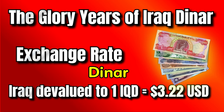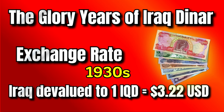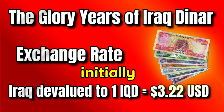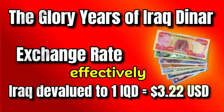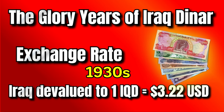The glory years of Iraq dinar exchange rate. Here's a brief overview of the history of the Iraqi dinar's exchange rate against the U.S. dollar since the 1930s. In the 1930s–1950s, the Iraqi dinar was introduced in 1932 and initially pegged to the British pound at a rate of 1 dinar equals 1 pound sterling. This effectively meant 1 IQD equals 4 U.S. dollars and 86 cents in the 1930s.